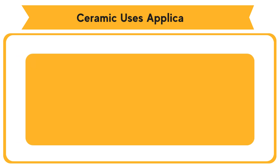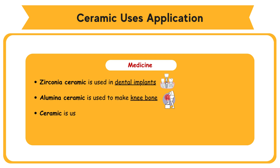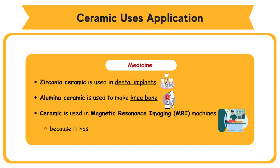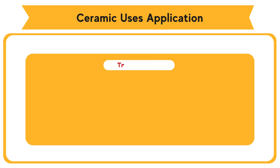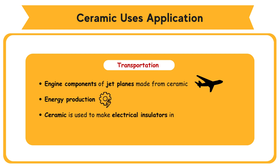Ceramic application areas. Medicine — zirconia ceramic is used in dental implants; aluminous ceramic is used to make knee bones; ceramic is used in MRI machines because it has superconductivity properties. Transportation — engine components of jet planes are made from ceramic. Energy production — ceramic is used to make electrical insulators in high voltage areas such as power stations.